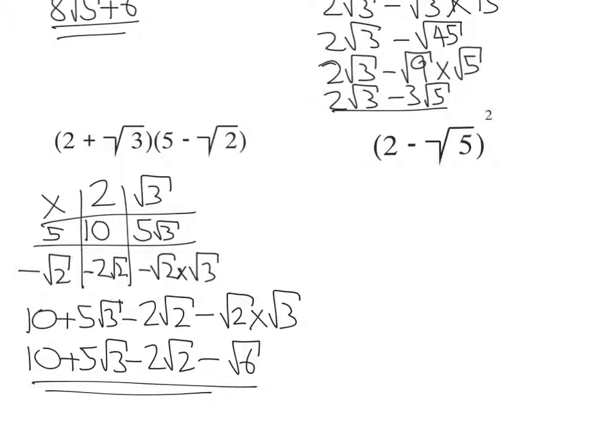So last one here. 2 minus root 5 all squared. Remember that means 2 minus root 5 times 2 minus root 5. So again, I'll get the grid out.